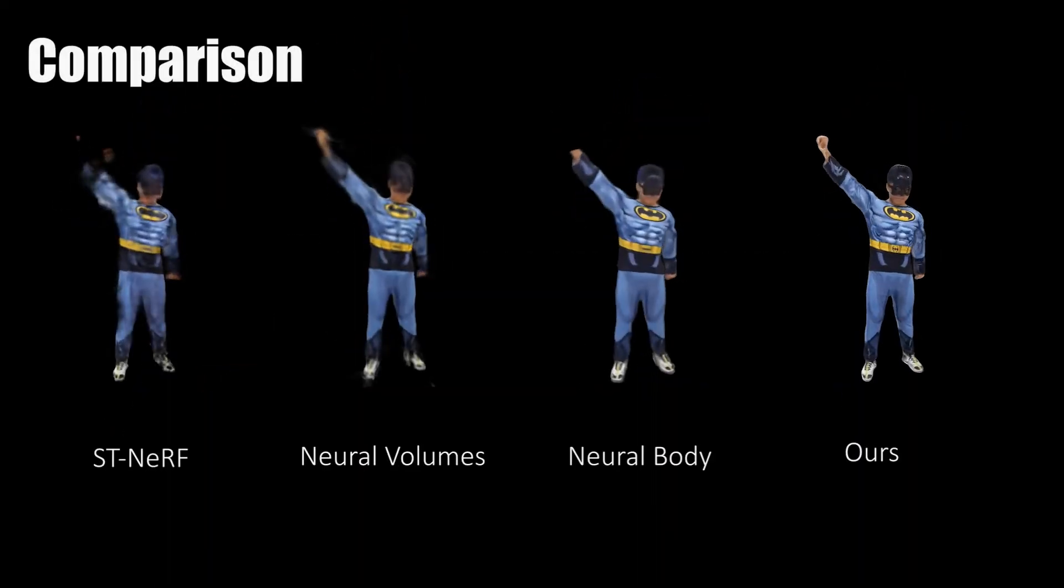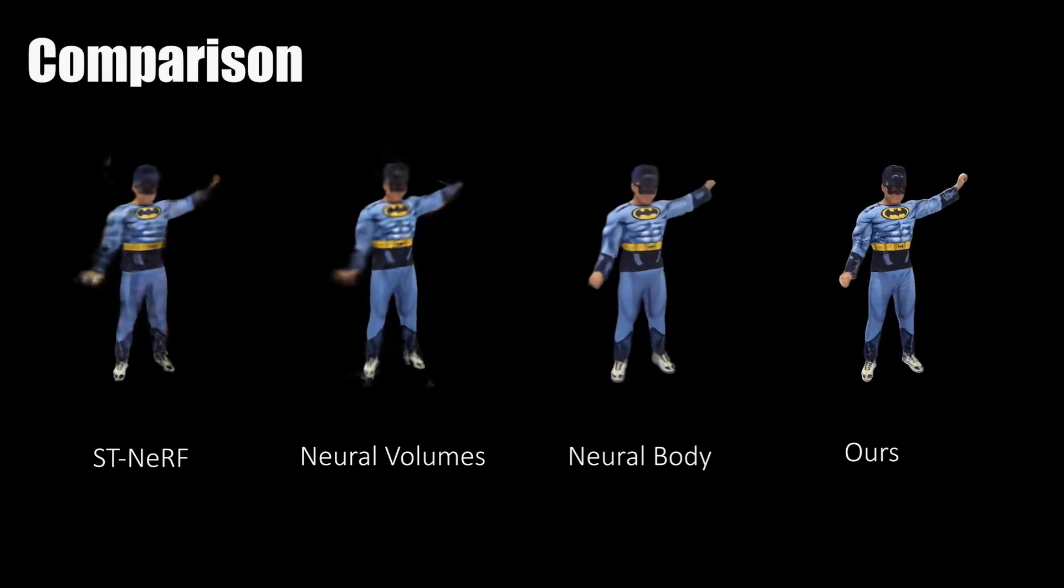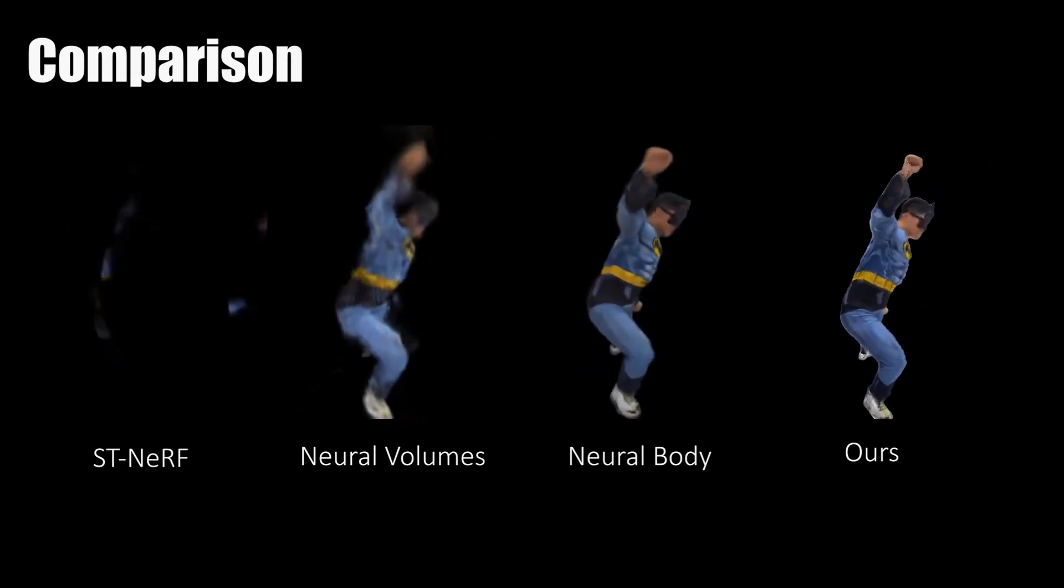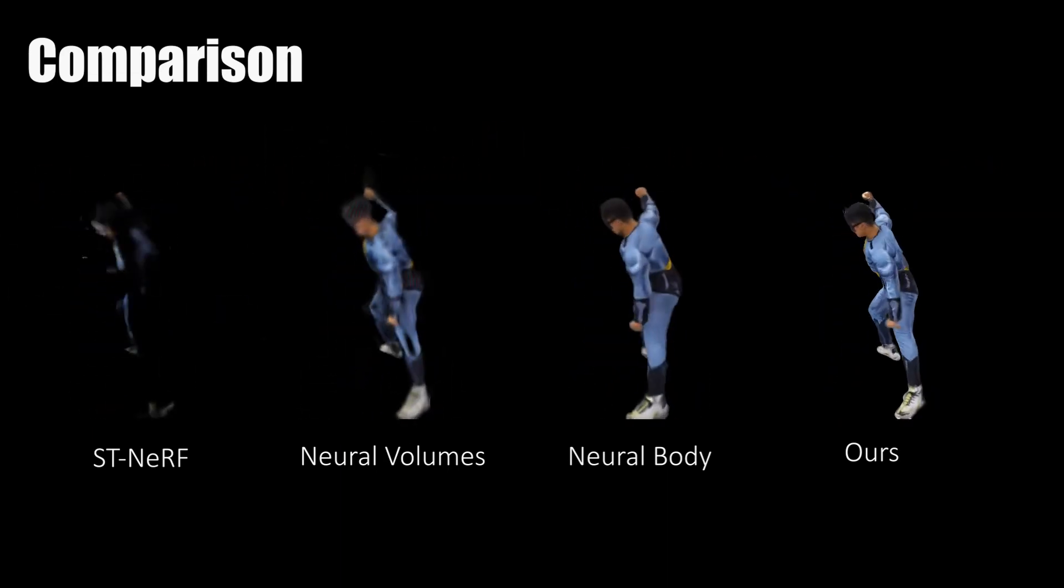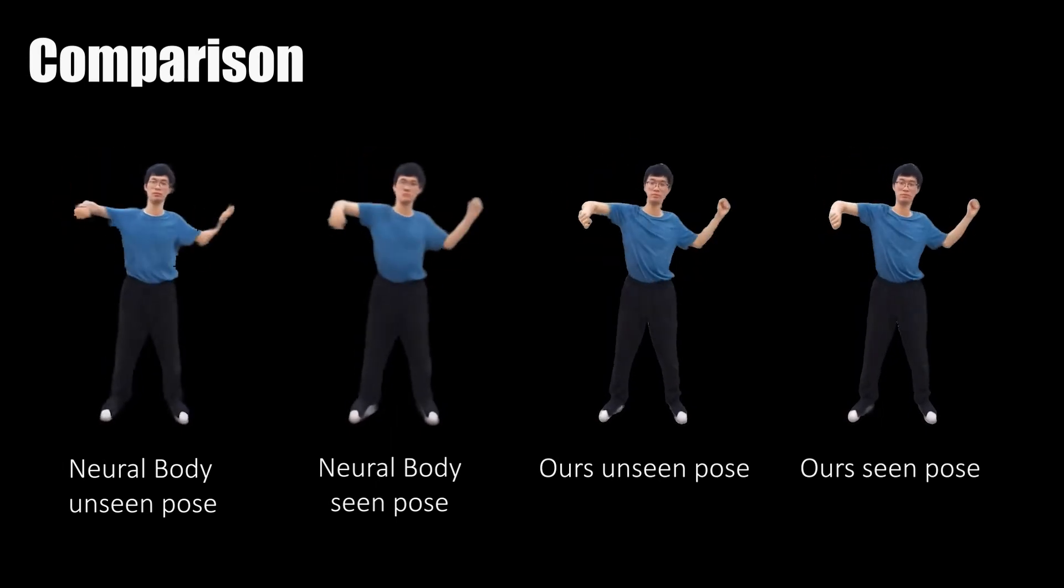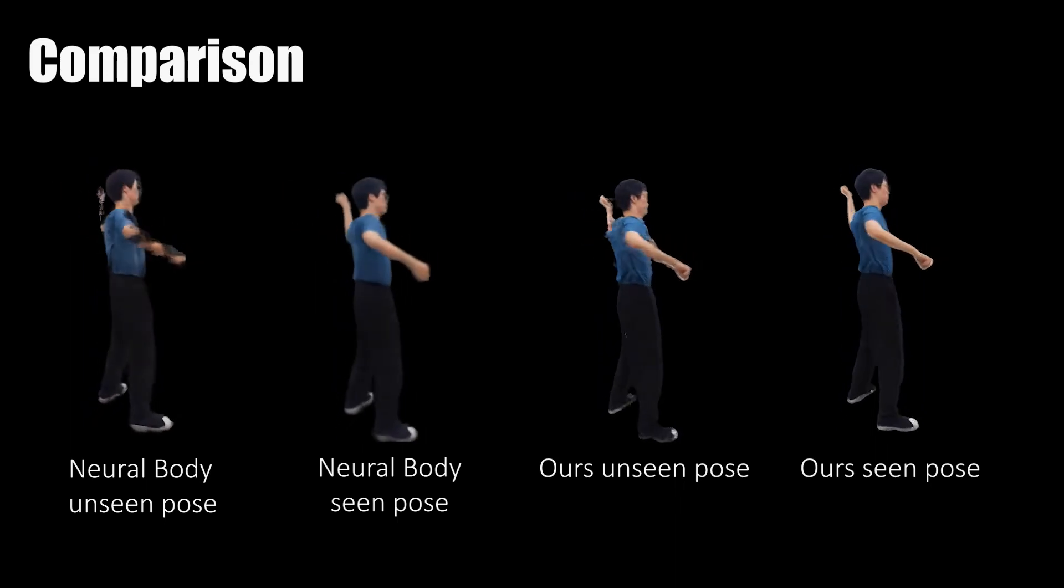Here we also do comparison with state-of-the-art methods in our sparse view setting. We first compare with per-scene training methods and our method achieves the most photo-realistic results. We also compare ours with per-scene training methods on pose generalization, such as Neural Body.